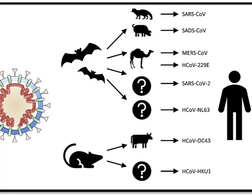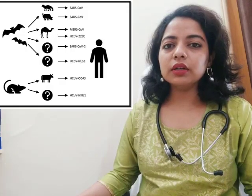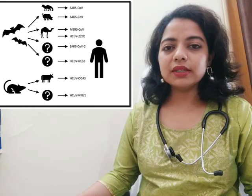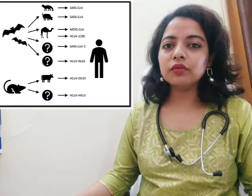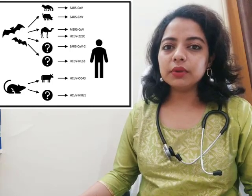Now let's come to the structure of the coronavirus. But first — why are these viruses infecting mammals and birds? Animals like cats, bats, rats, pigs, pangolins, and birds are infected because coronaviruses find the best habitat in warm-blooded vertebrates.